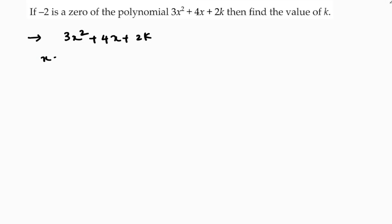Now x equals minus 2. So 3 times minus 2 whole square plus 4 times minus 2 plus 2k.